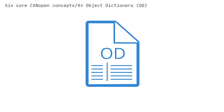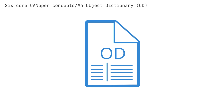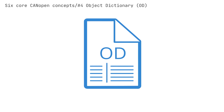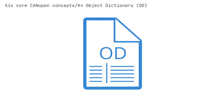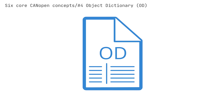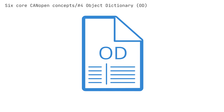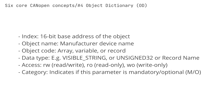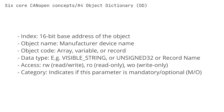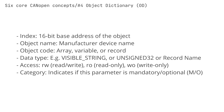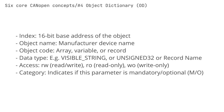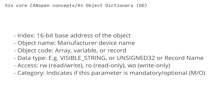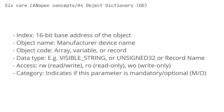All CANopen nodes must have an object dictionary (OD). The object dictionary is a standardized structure containing all parameters describing the behavior of a CANopen node. OD entries are looked up via a 16-bit index and an 8-bit subindex. For example, index 1008 subindex 0 of a CANopen-compliant node OD contains the node device name. An entry in the object dictionary is defined by attributes: index (16-bit base address), object name, object code (array, variable, or record), data type (e.g. visible_string, unsigned32, or record name), access (RW, RO, or WO), and category (mandatory or optional).